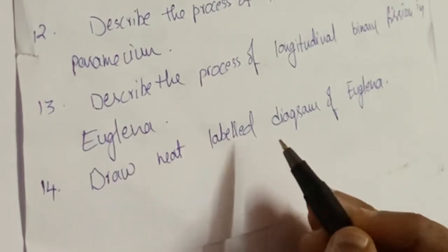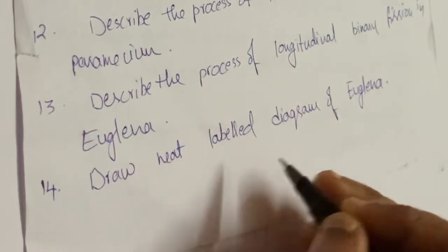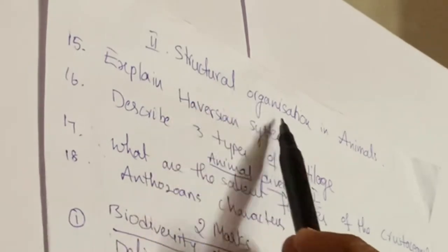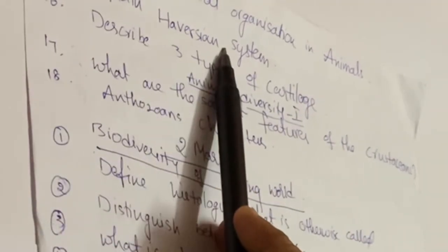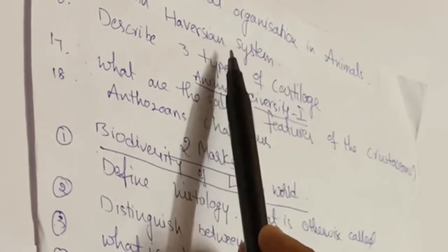From Structural Organization in Animals, the first question is: explain how the excretory system works and describe three types of cartilages. These two are very important.